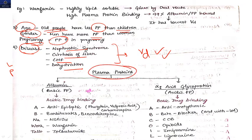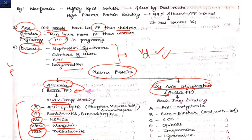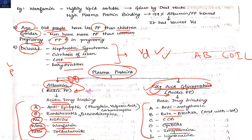Now coming to plasma proteins. There are two plasma proteins to discuss: albumin and alpha-1 acid glycoprotein. Albumin is a basic protein and binds acidic drugs; alpha-1 acid glycoprotein is acidic in nature and binds basic drugs. For drugs binding to albumin, remember the mnemonic 'ABNA-WORKTALO': anti-epileptic drugs, barbiturates, NSAIDs, warfarin, tolbutamide, and others. For drugs binding to alpha-1 acid glycoprotein, remember 'AB-COIL': anti-arrhythmics, beta blockers, calcium channel blockers, opioids, and imipramine.